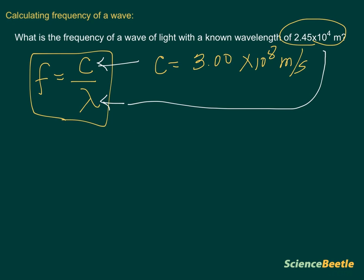So if we do this, we're going to get F is equal to 3.00 times 10 to the 8 meters per second. And then you're also going to get this divided by the wavelength, which in this case is 2.45. And let's make sure we get these decimals right. Okay, 4.5 times 10 to the 4th. And wavelength here is going to be represented in meters, okay?